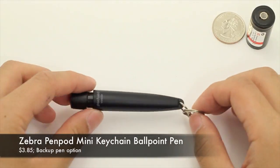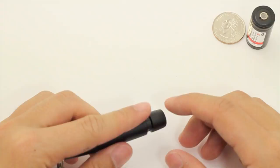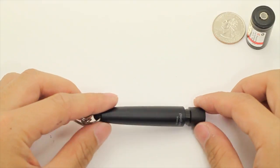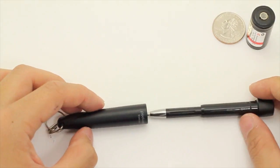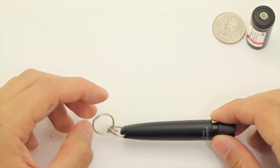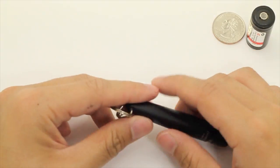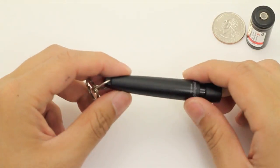This is the Zebra Pen Pod Mini, it's a keychain pen, ballpoint .7mm, it's got a full plastic construction. That's kind of what I don't like about it here. It's all plastic so it's lightweight, but I'm not confident in its durability. The hardware here at the attachment point looks nice, it looks sturdy, but it can fail just because this thing is plastic.